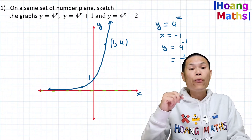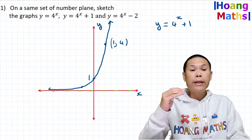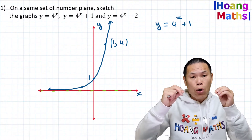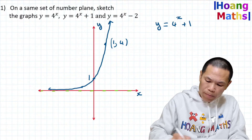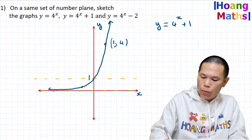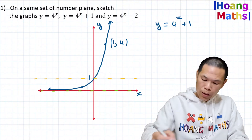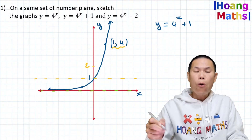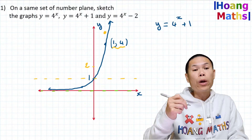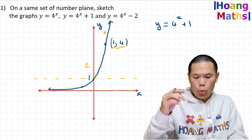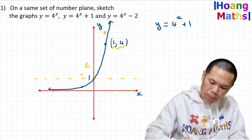Now let's graph y = 4^(x+1). Adding 1 to 4^x shifts the whole graph up one unit. The horizontal asymptote moves up by one unit from y = 0 to y = 1. The point (0, 1) becomes (0, 2), and (1, 4) becomes (1, 5). The point (-1, 1/4) moves up one unit to (-1, 1¼).